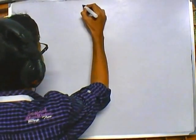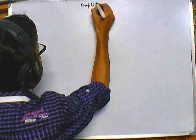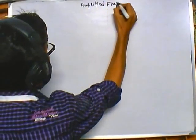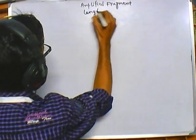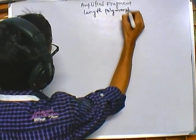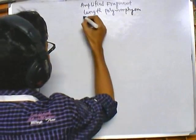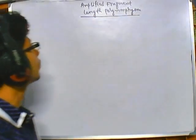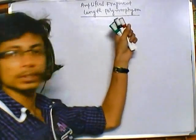This technique is called AFLP, or Amplified Fragment Length Polymorphism. So we are talking about Amplified Fragment Length Polymorphism.